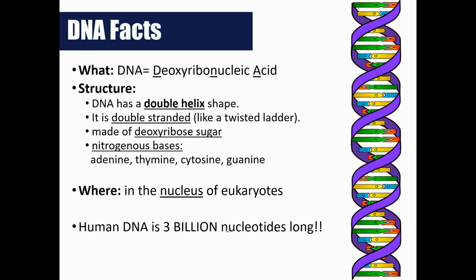The structure of DNA — if you look at your screen, this is the iconic picture of a DNA molecule, a two-dimensional version. DNA is what we call a double helix shape because it looks like a ladder that's been twisted over itself. DNA is double-stranded, so it has two sides. It contains the sugar deoxyribose — that's where DNA gets its name. There are four options for nitrogenous bases in DNA: adenine, thymine, cytosine, and guanine. DNA is found in the nucleus of eukaryotes; since eukaryotes have a nucleus, we find the DNA there.